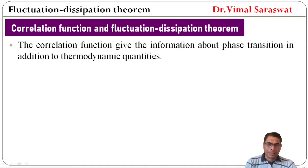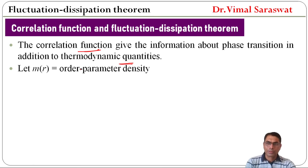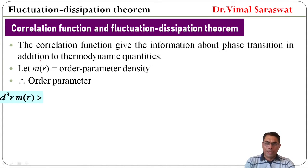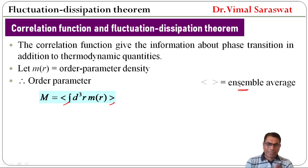The correlation function gives information about phase transition in addition to thermodynamic quantities. Let M(r) be the order parameter density. The order parameter M is equal to the ensemble average of the integration d³r of M(r).